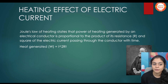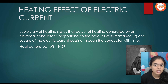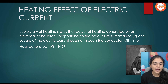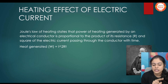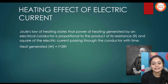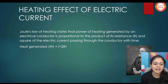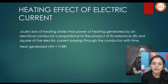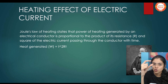Next we come across the heating effect of electric current, given by Joule's law. Joule's law states that the heat generated by an electrical conductor is proportional to the square of the current flowing through it, the resistance, and the time of flow of charges. The formula is H is equal to I squared RT. With that formula you can write the full definition.